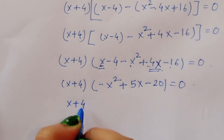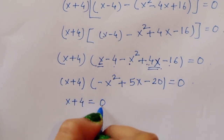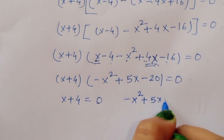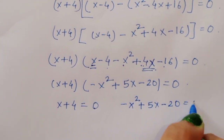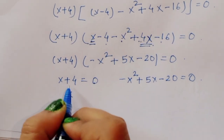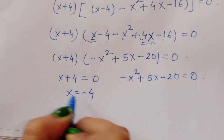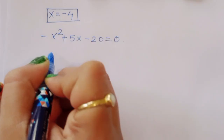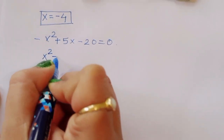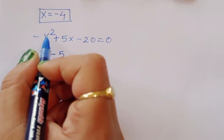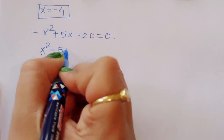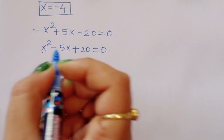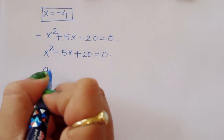So we can write: x plus 4 equals 0 is one solution, and minus x squared plus 5x minus 20 equals 0 is the other. From x plus 4 equals 0, we get x equals minus 4 — this is the first solution. Multiplying the quadratic by minus 1 gives x squared minus 5x plus 20 equals 0.